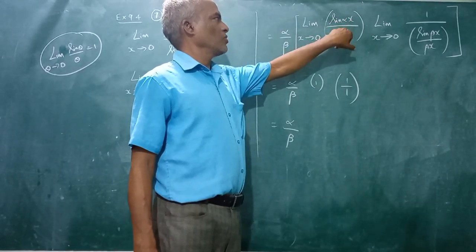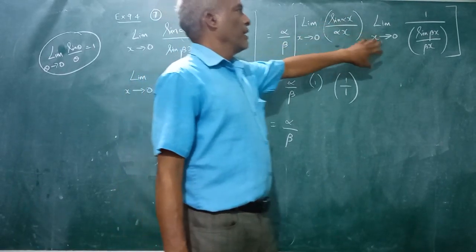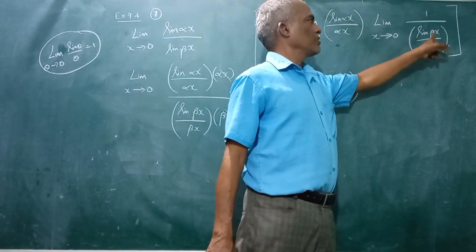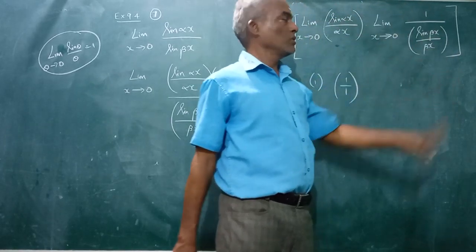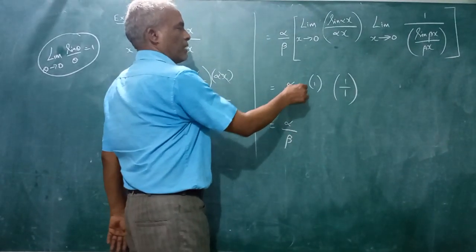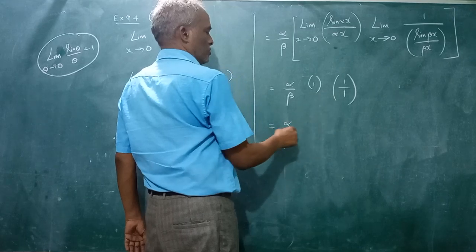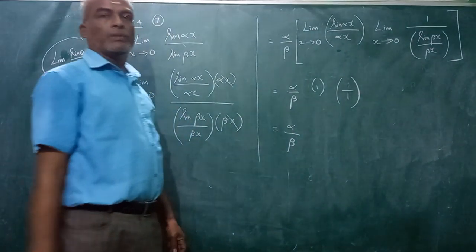x is equal to 0, sin 0 by 0 is 1, here again sin beta 0 by 0 is 1, 1 divided by 1 is also 1, so alpha by beta into 1, into 1 by 1, so the final answer is alpha divided by beta. Thank you.